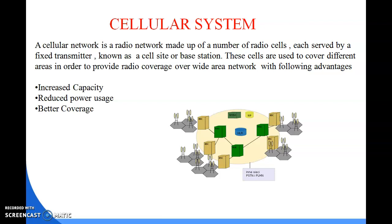Today we are going to discuss about the cellular system with the new concept of cellular in mobile communication. A cellular network is a radio network made of a number of radio cells, served by a fixed transmitter known as a cell site or base station. These cells are used to cover different areas in order to provide radio coverage over a wide area network.